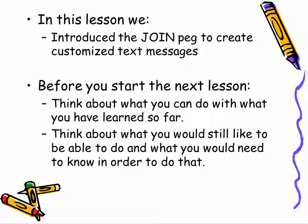In conclusion, in this lesson we've learned how to use the green join peg that comes from the Operators menu to create customized text messages — most often associated with data being stored from the user or generated during the program. Now that you know about this, before you start the next lesson, I want you to think about what you know you can do so far, and what you would still like to be able to do — where there might be some holes in what you've learned that would prevent you from doing that. Hopefully, if you think about that for a little bit, you'll realize the topics we're going to talk about in our next couple of lessons.